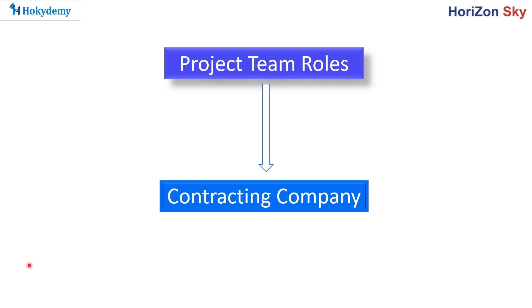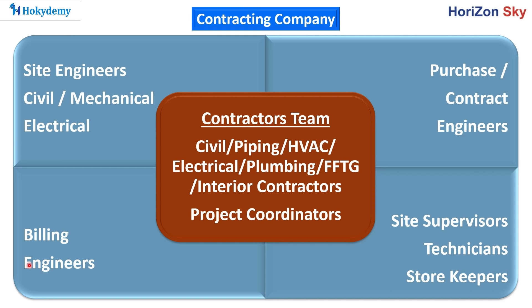The main role of a contracting company is executing the different designs provided by the engineering consultants and architects. They are bound to follow all protocols, specifications, and quality standards set by the client, architect, and engineering consultant, and execute the work within the given timeframe and definitive cost.